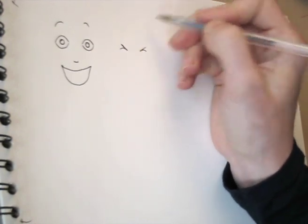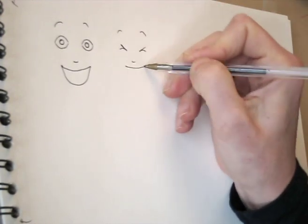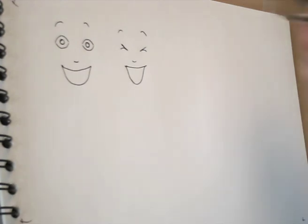A super happy face has squinted eyes, the corners of the mouth upwards, a big smile, and arched eyebrows.